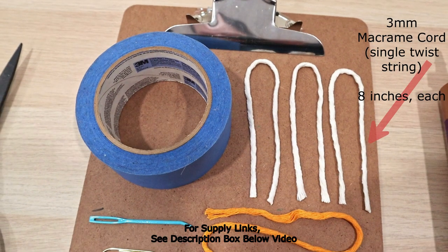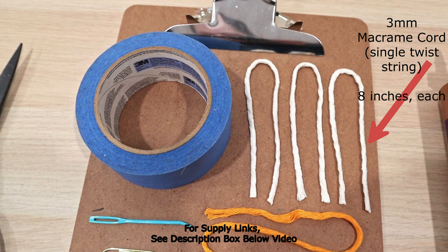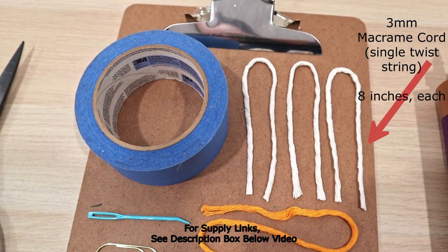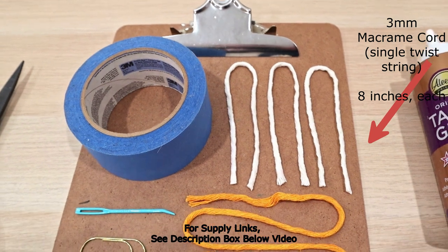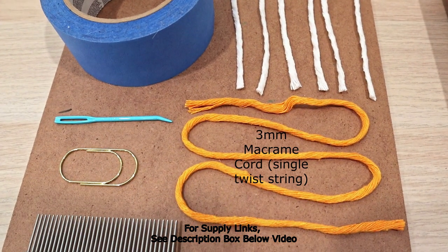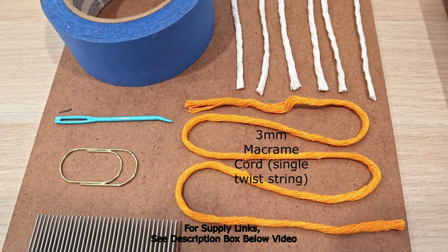For this project I use three millimeter macrame cord, specifically single twist string. For the base I am using an off-white, three cords measuring about eight or nine inches each. And for the colored portion I'm also using three millimeter macrame cord single twist string, and I'll show you how to pre-measure it. It'll all depend on the actual size of your paper clip.